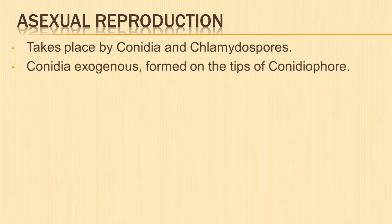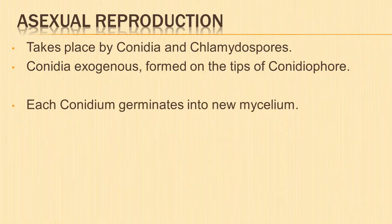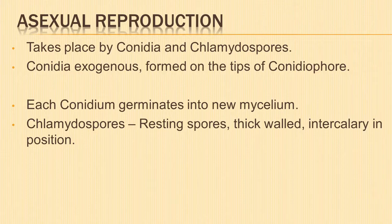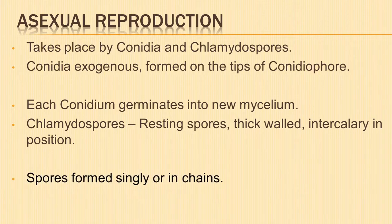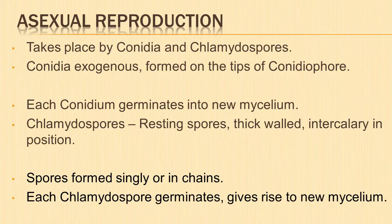Conidia are exogenously formed spores found on the tips of conidiophores. Each conidium is capable of germinating into a new mycelium. Chlamydospores are resting spores. They are thick-walled and intercalary in position. They may be formed singly or in chains. Under suitable conditions, each chlamydospore can germinate and give rise to a new mycelium.